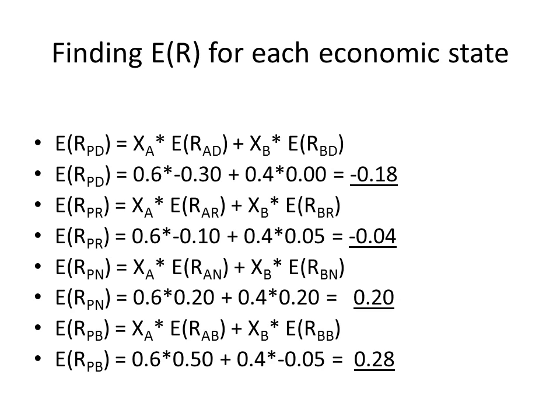In recession, stock A is expected to return negative 10% and stock B positive 5%. The expected return of the portfolio in recession is therefore minus .04, or minus 4%. In normal times, we expect both stocks to return 20%, so the portfolio return is also 20%. Finally, in boom times, stock A is expected to return 50% while stock B is expected to lose 5%, giving the portfolio an expected return of .28, or 28%.